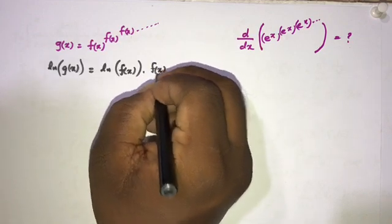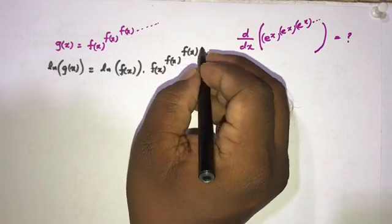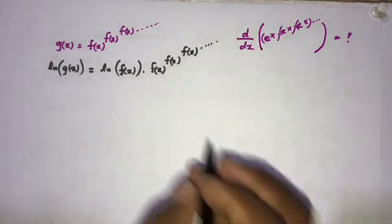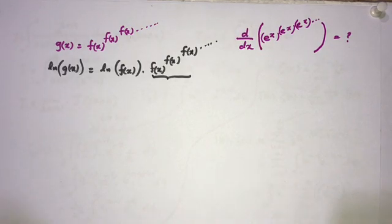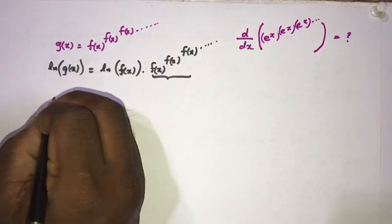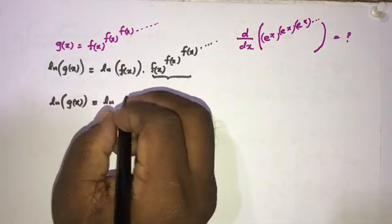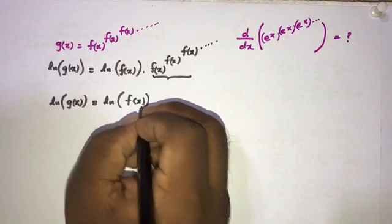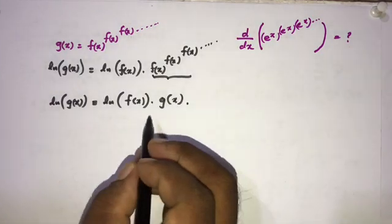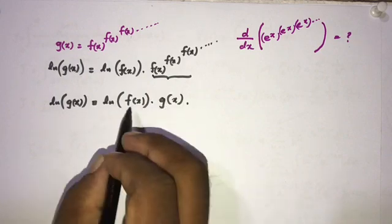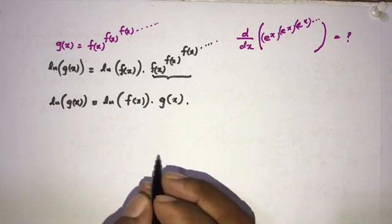...times f of x to the f of x to the f of x and so on. Now we know this term is equal to g of x, so we can write: natural log of g of x is equal to natural log of f of x times g of x. On the right-hand side we have a product of two functions, so now I am going to take the derivative.